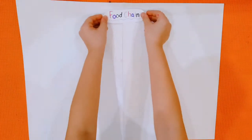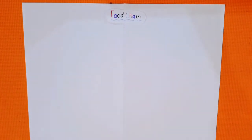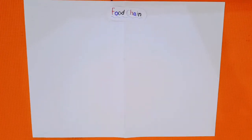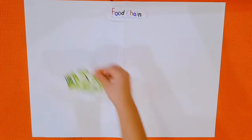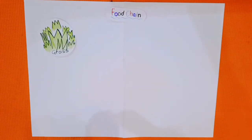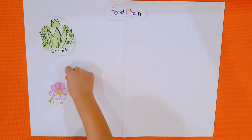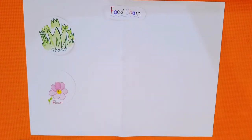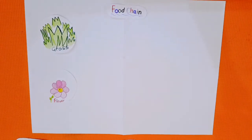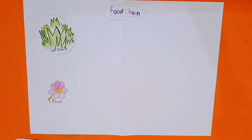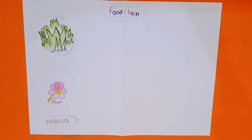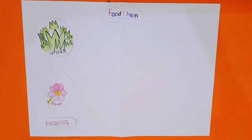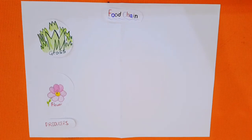Hi everyone! Today let's learn about food chain. There are grass and flower at first. These are called producers. Producers make energy by sunlight.